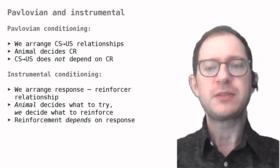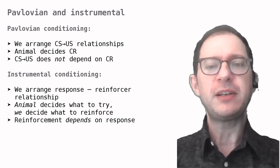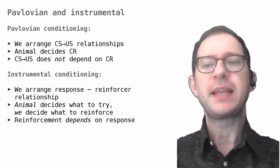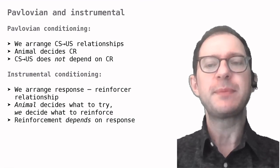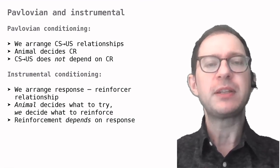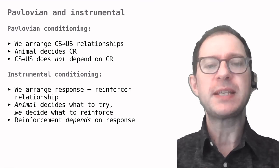In future lessons, we will see that Pavlovian and instrumental learning have also many things in common. Exactly how they are related is one of the big open questions in animal learning. We'll talk about it in a future lesson, once we have learned some more about learning.